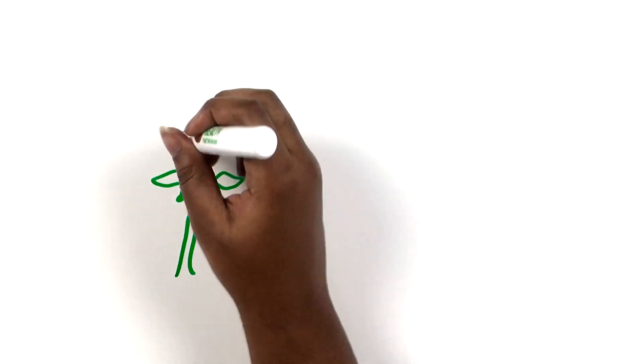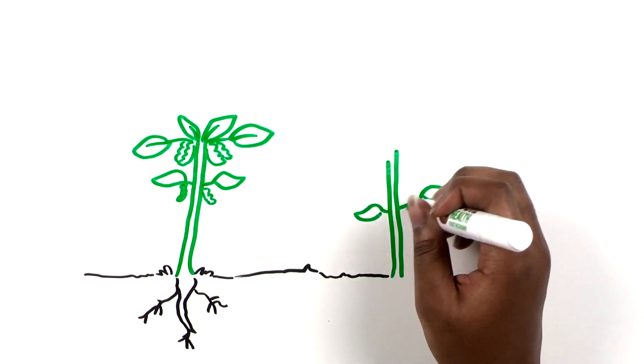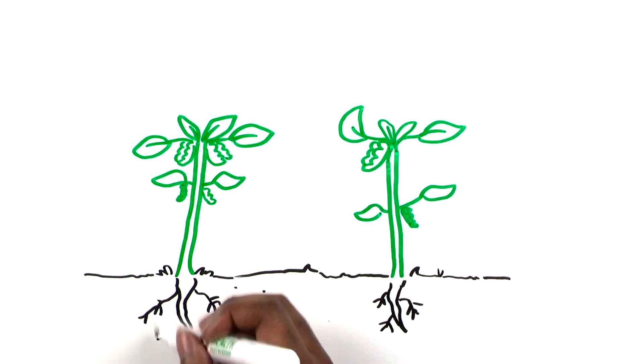More organic matter in the soil means better soils for farming, healthy crops, and protecting the environment.